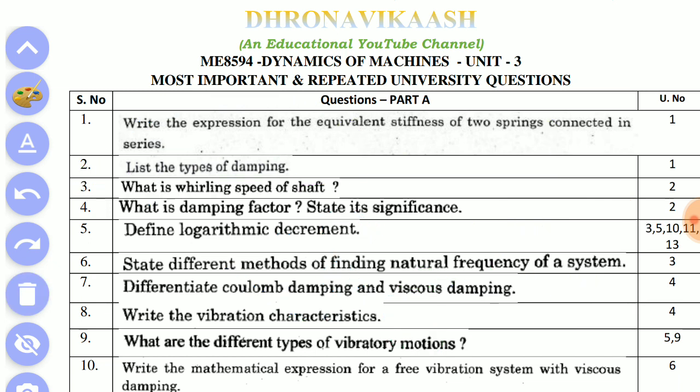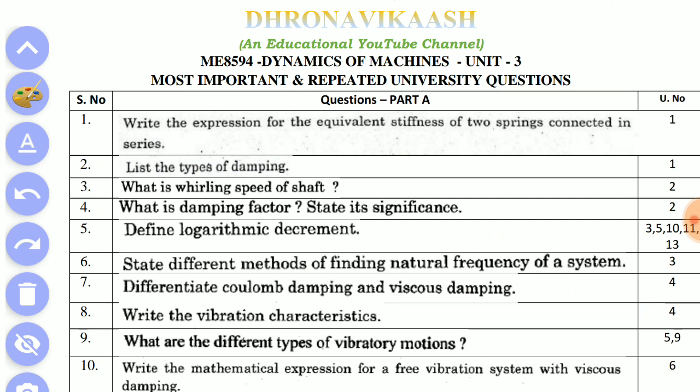There are different types. You can mark them. This is the first question. What is the critical speed of a shaft? This is the unit. In this video, you can see all the answers.